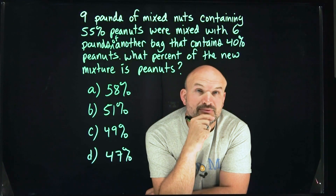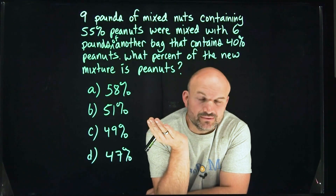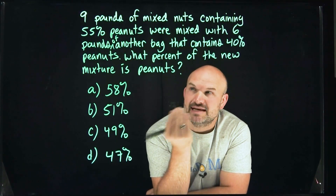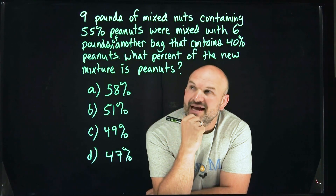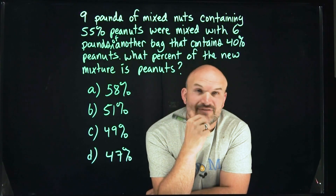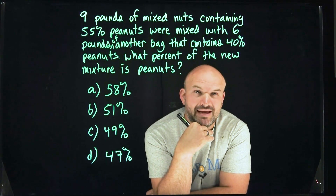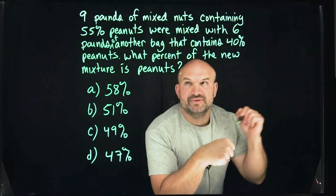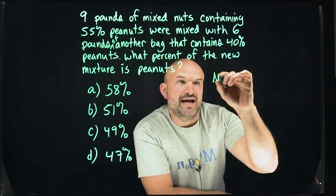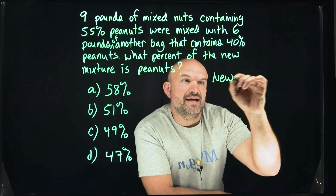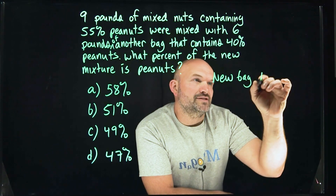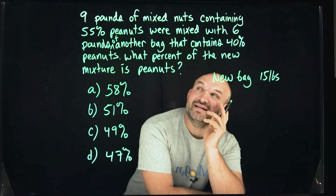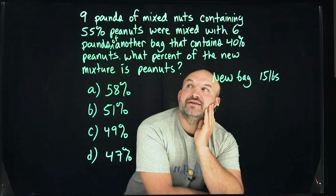What I want to do is set up the problem, because when you're dealing with a word problem, that's really the most important thing — set it up and make sure we're going about it the correct way and it's making sense. So a couple of things I recognize: the new bag is going to be 15 pounds, bag number one is nine pounds, and bag number two is six pounds.